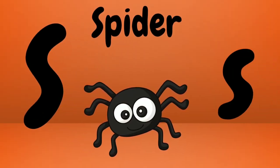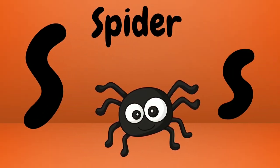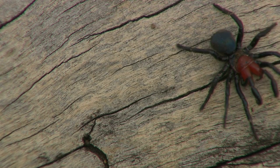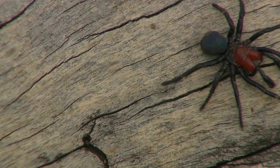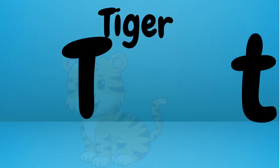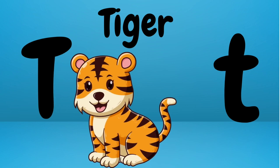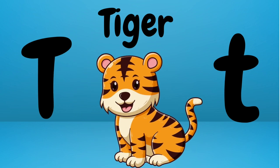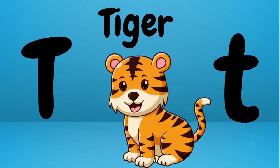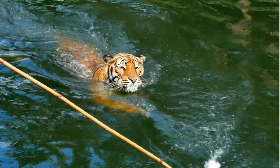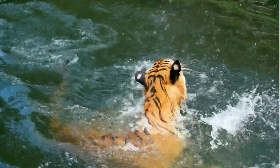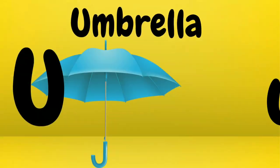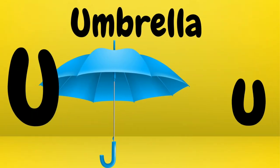S is for spider. Spider. Spider. This is a spider. Spider. T is for tiger. Tiger. Tiger. This is a tiger. Tiger.